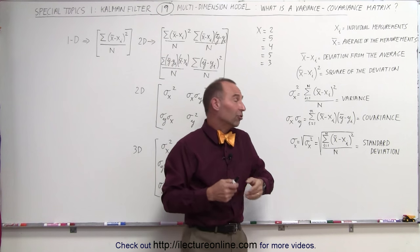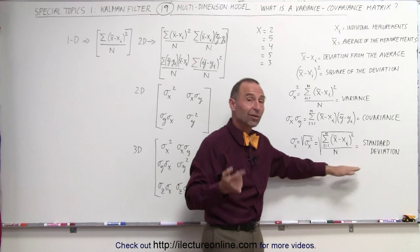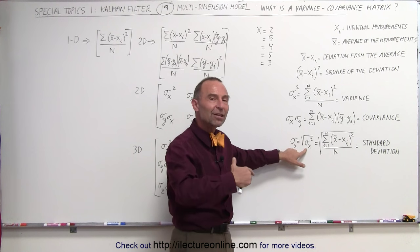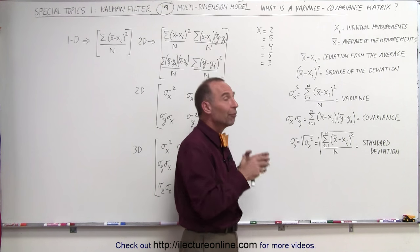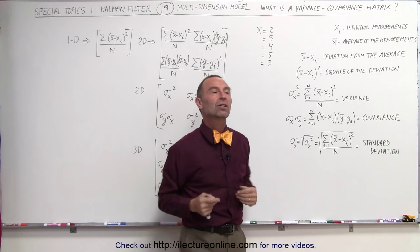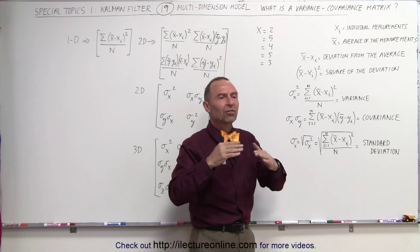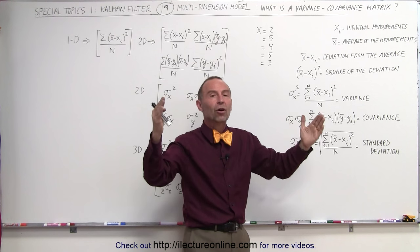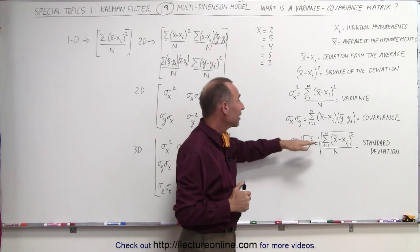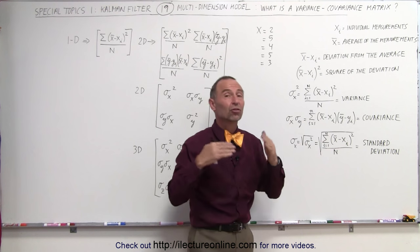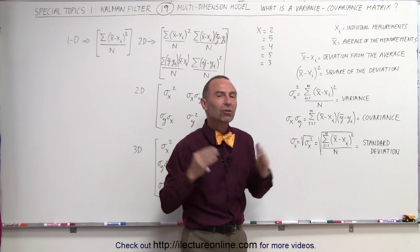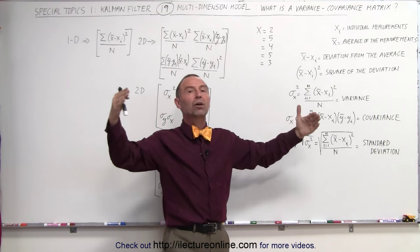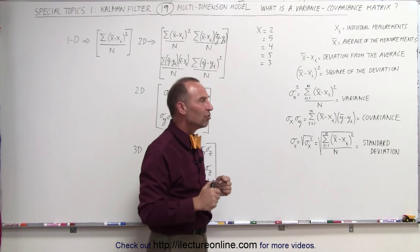The variance is actually the standard deviation squared, because the definition of the standard deviation is to take the variance and take the square root of that. So if we square the standard deviation, we get the variance back. The variance is a larger number than the standard deviation. The standard deviation says that if you're plus or minus one standard deviation, about two-thirds of all the values are expected to fall within that range. But with the variance, which is the standard deviation squared, you expect almost 100% of the readings to fall within that plus or minus range. So the variance is a much broader range from the mean than the standard deviation.